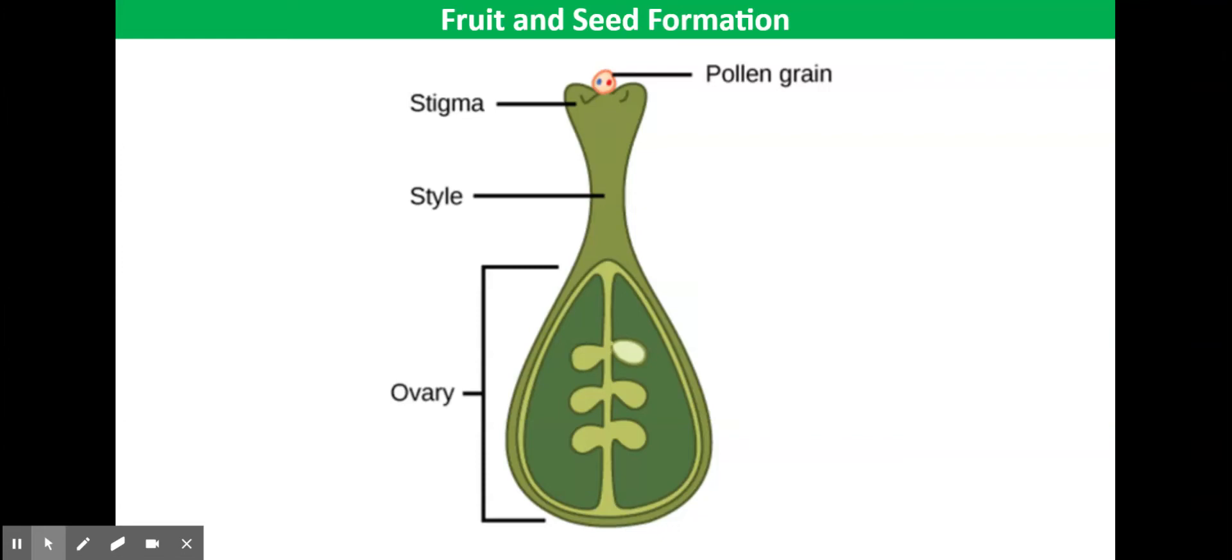This video tutorial is about fruit and seed formation. When a pollen grain lands on the stigma of a flower of the correct species, a pollen tube begins to grow.